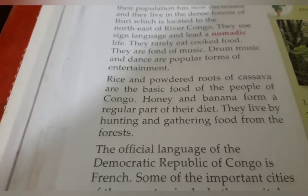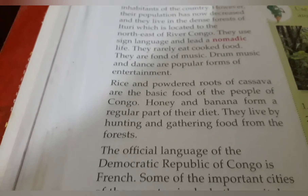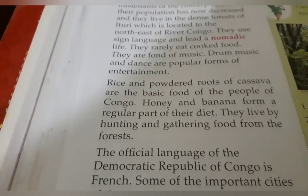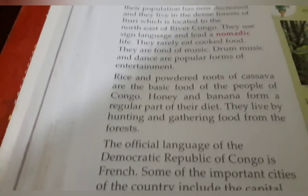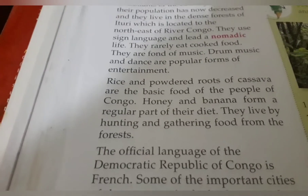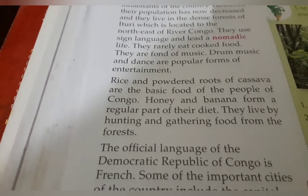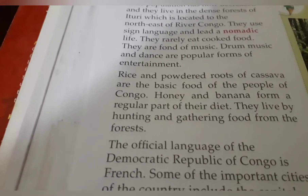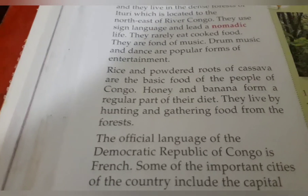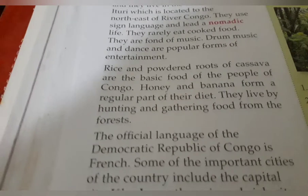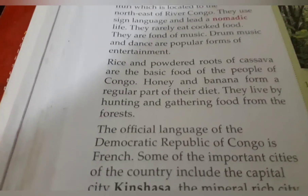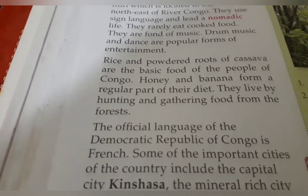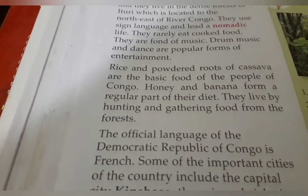Their food includes honey, banana, rice, powder roots and cassava. They are very limited in their food choices and mostly take food that can be obtained easily from the jungle. They also eat raw meat. The most common food items are rice and cassava.